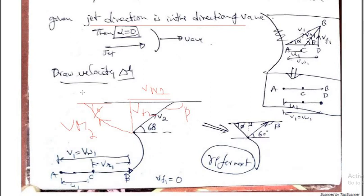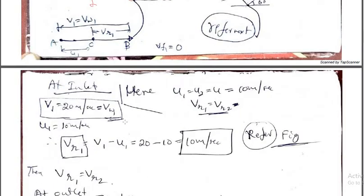This is the line diagram I have written. V2 is given. How to resolve the components of V2? Vf1, Vf2, and Vw2. Draw vertical and horizontal lines. Vr2 always acts on the left side. When the jet strikes horizontally, V1 equals Vw1. They are given the value 20 meter per second. U1 is also given as 10 meter per second. Can you calculate Vr1? Vr1 equals V1 minus U1 equals 10 meter per second.